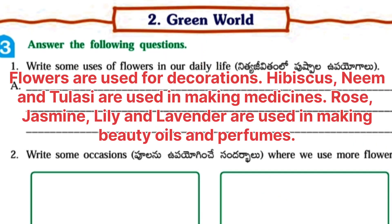Third one, answer the following questions. First question: write some uses of flowers in our daily life. Answer: flowers are used for decorations. Hibiscus, neem, and tulsi are used in making medicines. Rose, jasmine, lily, and lavender are used in making beauty oils and perfumes.